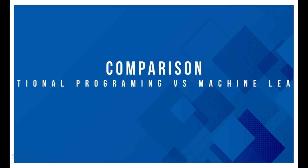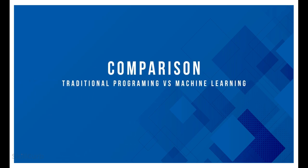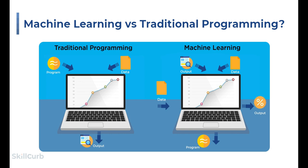Now let's compare both approaches diagrammatically. We can spot the differences between the two: one being the traditional programming approach and the other the machine learning approach. For traditional programming, the output is processed data. Whereas in machine learning, we get the output in terms of a model, which is later used to make predictions to retrieve the predicted outcome.